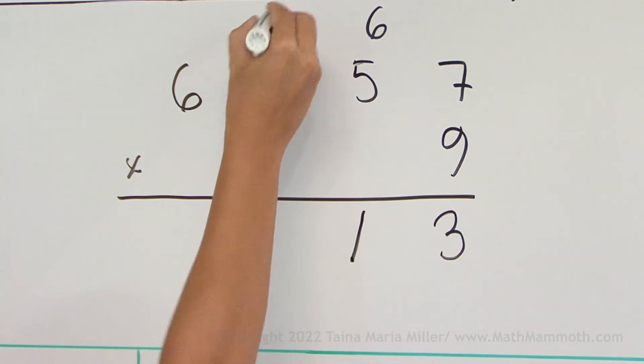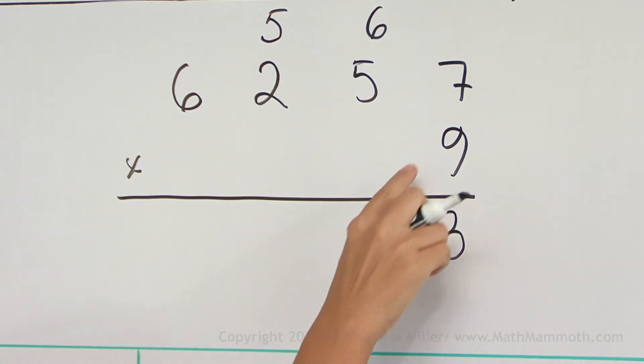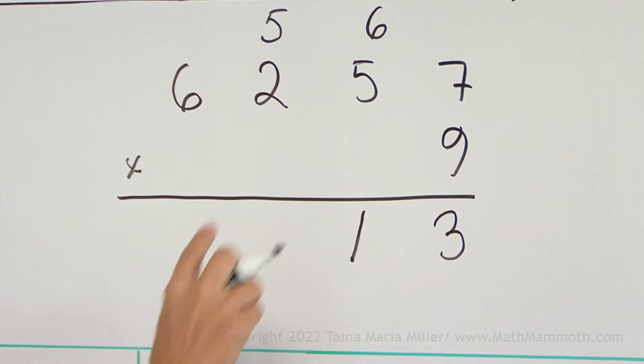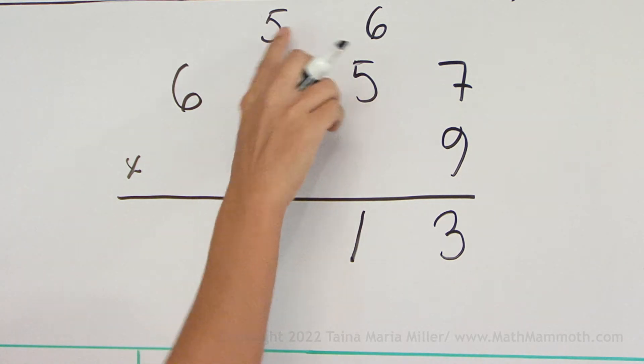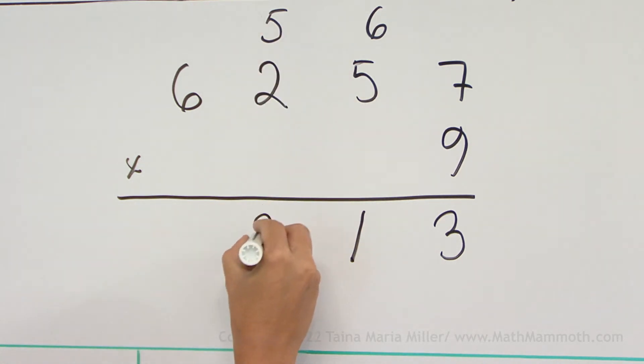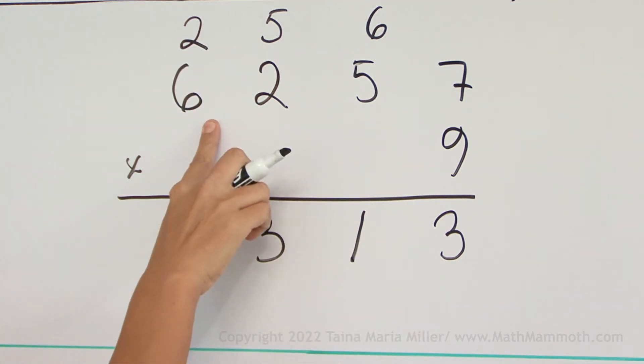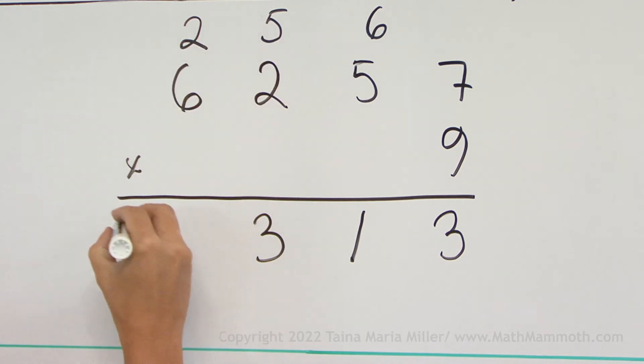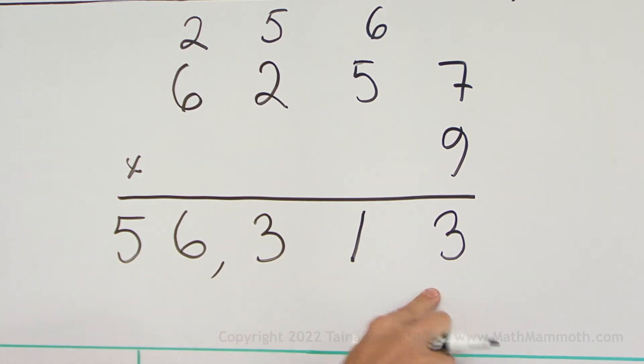Then 9 times 2, which is 9 times 200. But in my mind I just go 9 times 2, 18 plus 5, 23. 3 here, 2 regrouped. And then 9 times 6, 54 plus 2, 56. So the answer is 56,330.